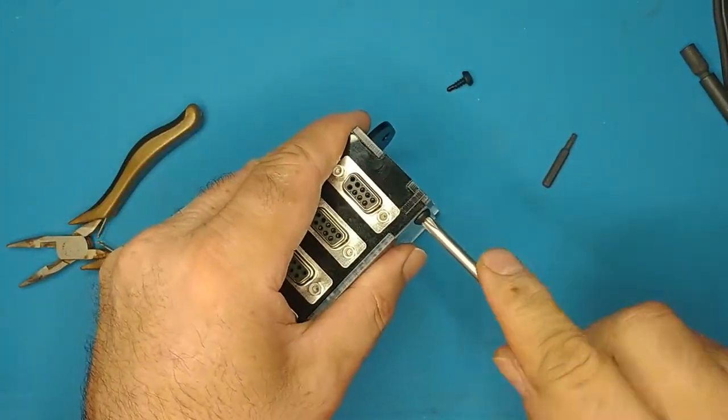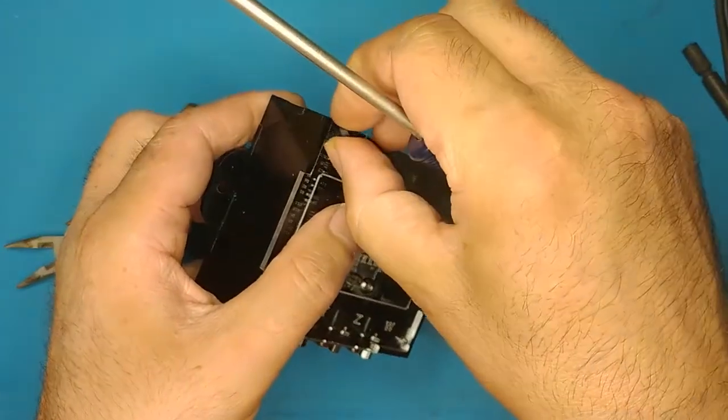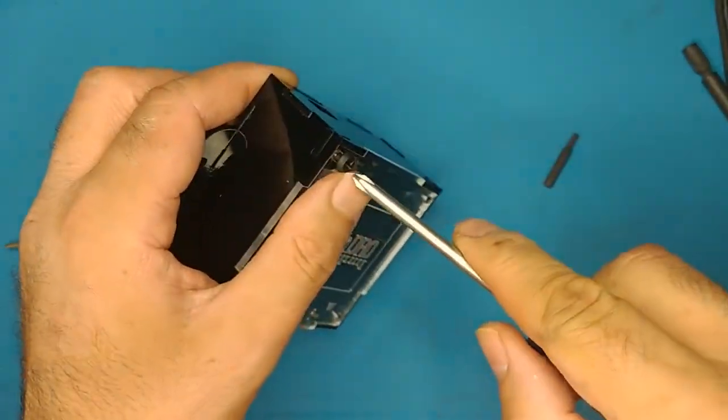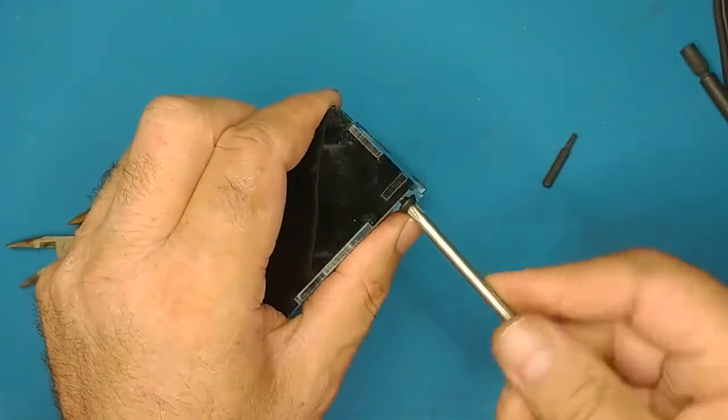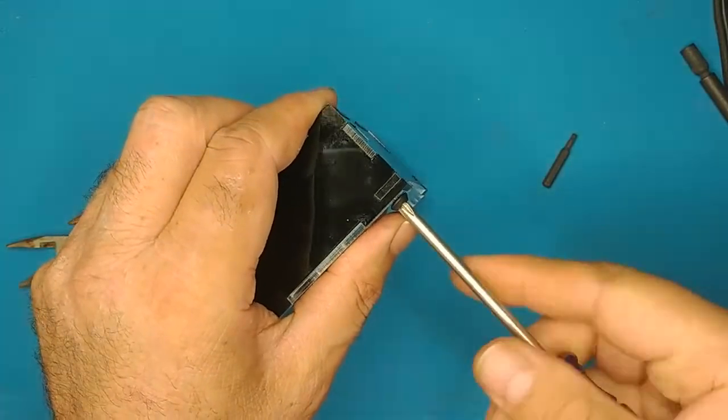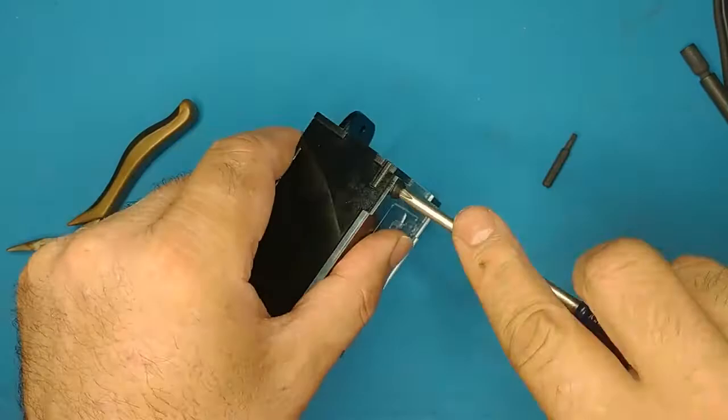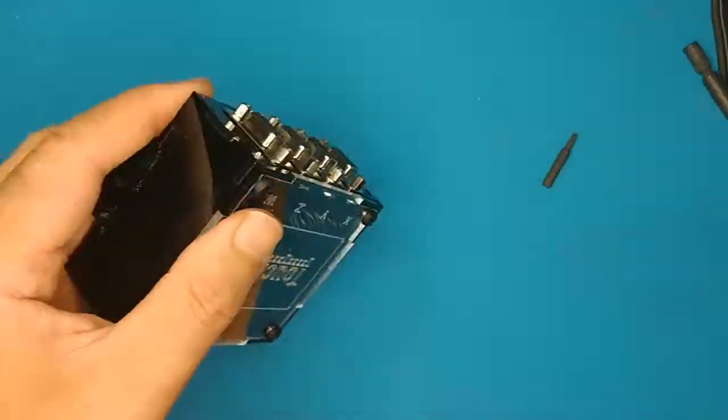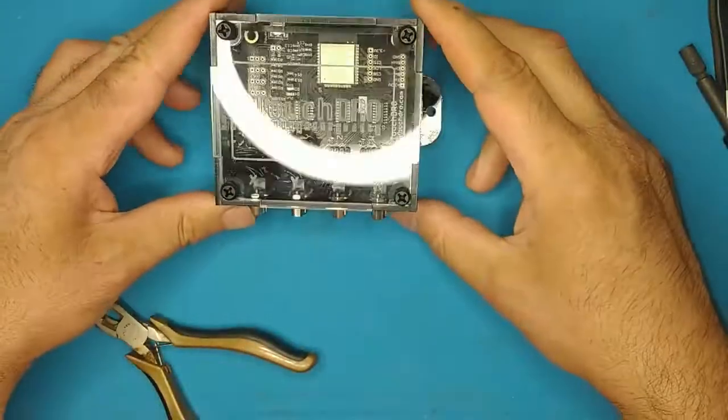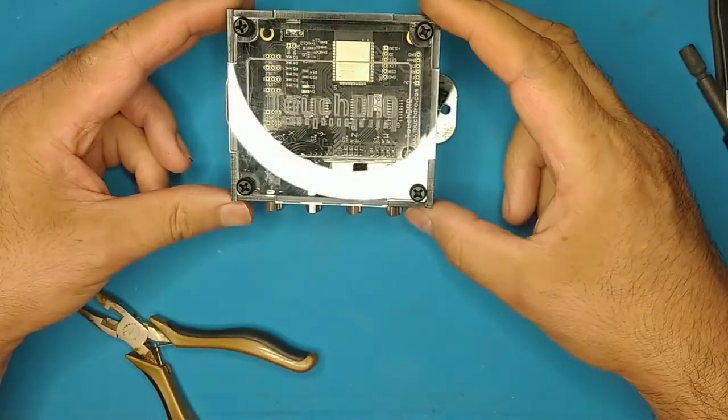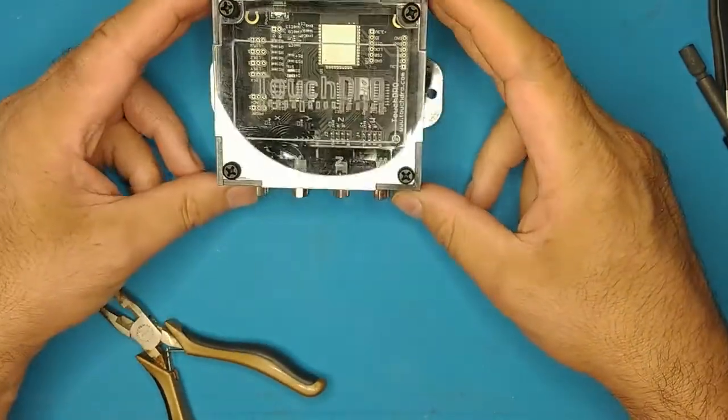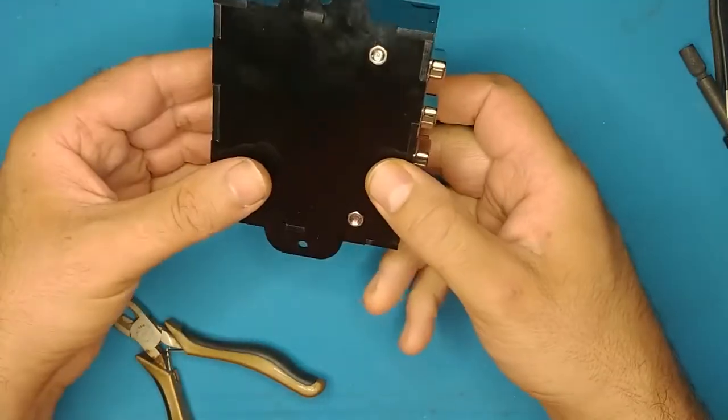And they're just self-tapping, self-tapping screws. So they're just digging into the plastic, those little plastic lugs that we installed. So again, don't get aggressive with the torque. You're just holding the cover on. All right. And I think that is it. Now we have a fully assembled two-axis setup, TouchDRO board and enclosure. Looks pretty good.